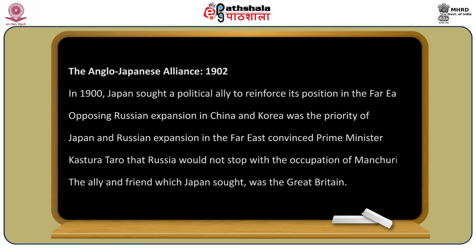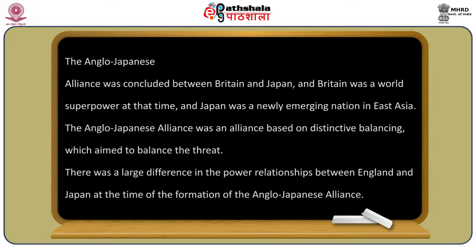In 1900, Japan sought a political ally to reinforce its position in the Far East. Opposing Russian expansion in China and Korea was Japan's priority. Russian expansion convinced Prime Minister Katsura Taro that Russia would not stop with the occupation of Manchuria alone. The ally Japan sought was Great Britain. The Anglo-Japanese alliance was concluded between Britain, a world superpower of the time, and Japan, a newly emerging nation in East Asia.